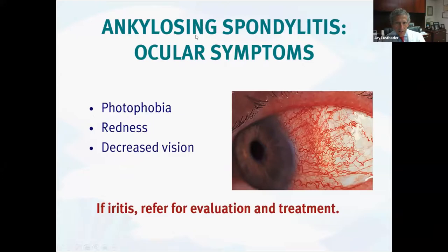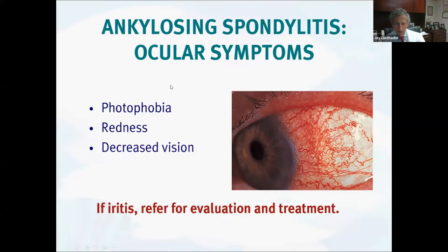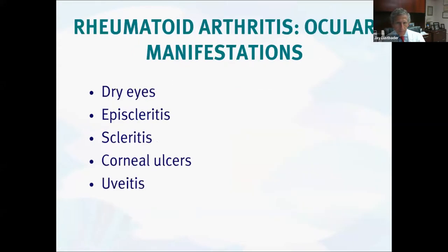With ankylosing spondylitis classically, but many other rheumatologic diseases, we can certainly get ocular symptoms, particularly if the patient develops iritis — which again, classically is with ankylosing spondylitis. The symptoms patients may complain about are photophobia, redness, and perhaps decreased vision. When these patients present with that, we should take a look to see if there's evidence of inflammation either in the anterior chamber or in the vitreous.